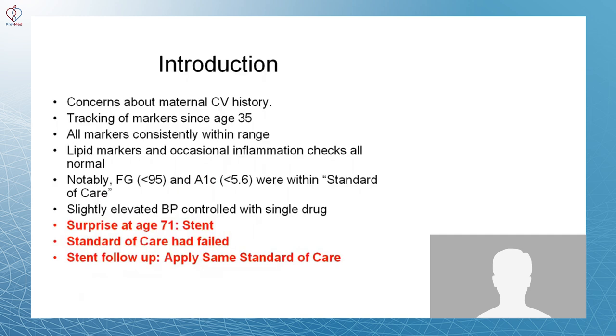Glucose was about 95 or so. A1C was below 5.6, all were within the standard of care. Slightly elevated blood pressure, tended to run about 140 or 145 over 80 or 85. A single drug I took, Losartan, I'd been taking for about 15 years or so, and that controlled it very nicely.